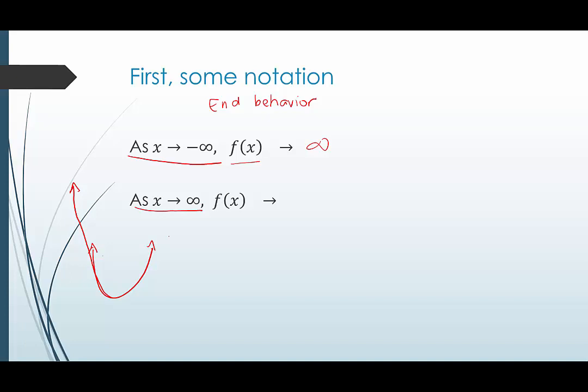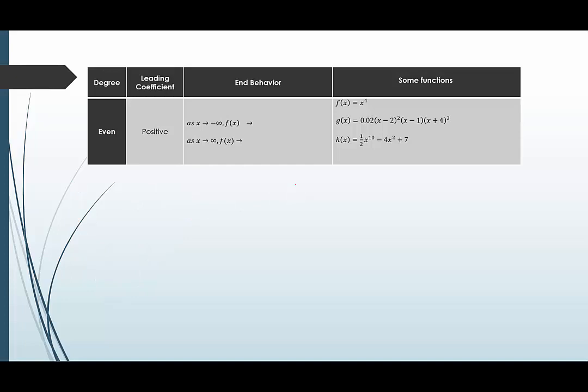As x is getting bigger and bigger, f of x is also getting bigger and bigger — going towards positive infinity. So this is defining the end behavior. The interesting thing about polynomial functions is that the leading coefficient and the degree tell us about the end behavior of any polynomial function. We're going to look at some examples. First, when the degree is even and the leading coefficient is positive — they all have the same end behavior.